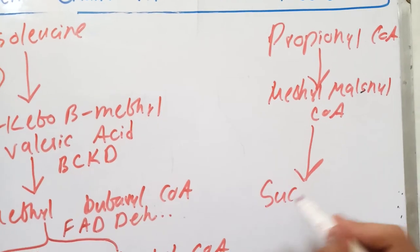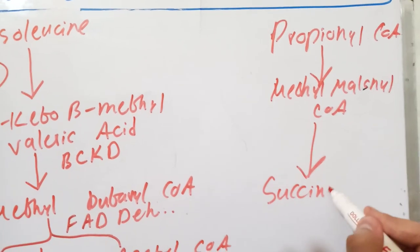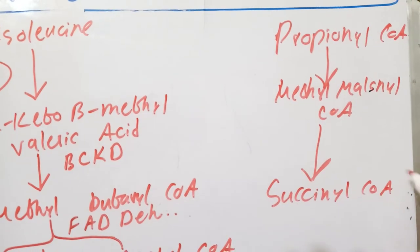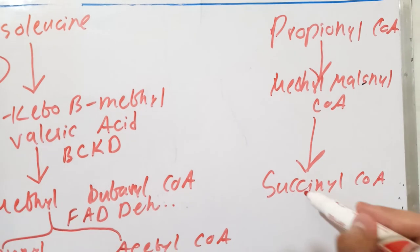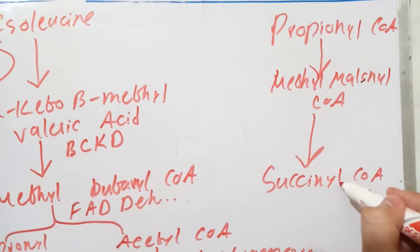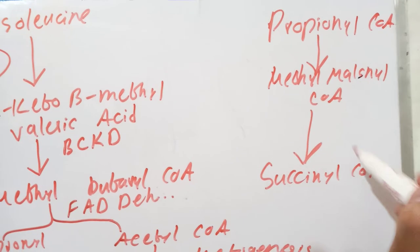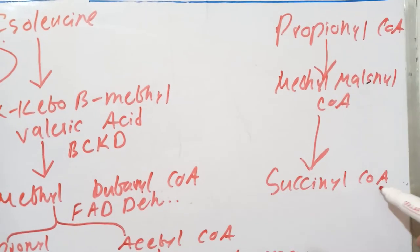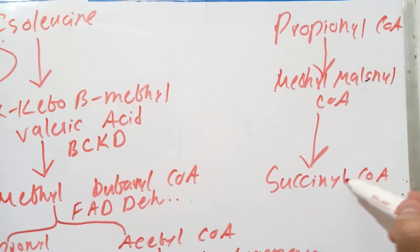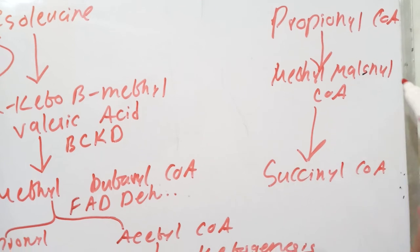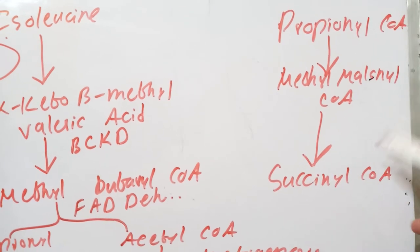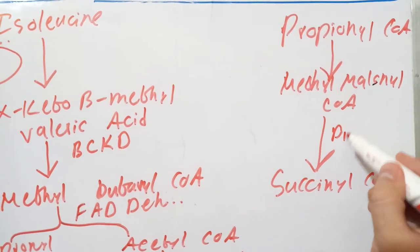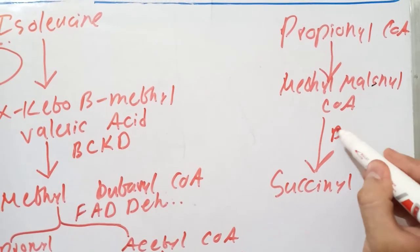Methylmalonyl-CoA is converted into succinyl-CoA. This is the glucogenic action because succinyl-CoA is a glucogenic compound of the Krebs cycle. This is a vitamin B12-requiring reaction.